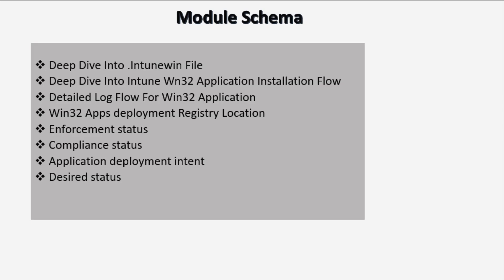Now let's quickly check today's module schema. In today's video we are doing a deep dive into the Intune win file, then we will discuss the win32 application installation flow and then the detailed log flow for the win32 application. After that we will discuss the registry location for win32 application deployment, and then we will discuss enforcement status, compliance status, application deployment intent, desired status, and their respective values.